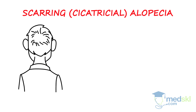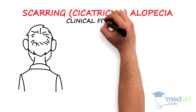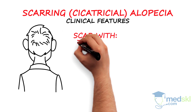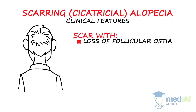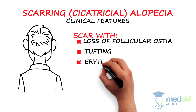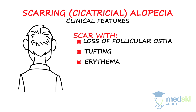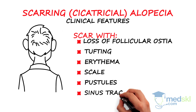Depending upon the subtype of cicatricial alopecia, clinically one may see scar with loss of follicular ostea, tufting where multiple hair fibers exit one ostea, erythema, scale, pustules, and sinus tracts.